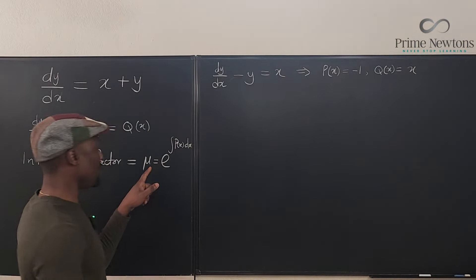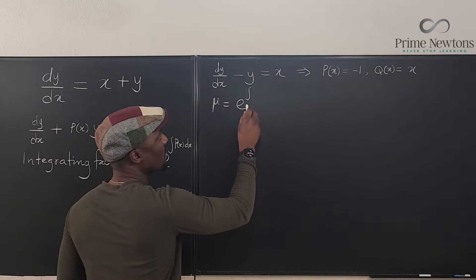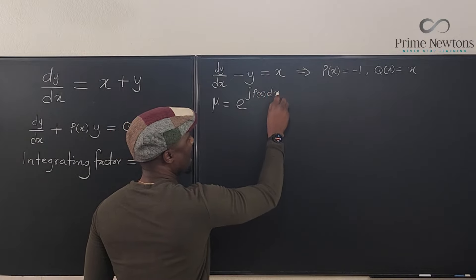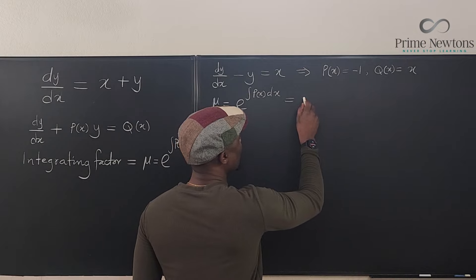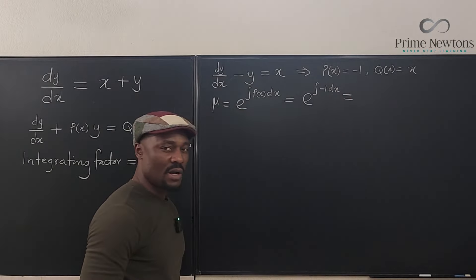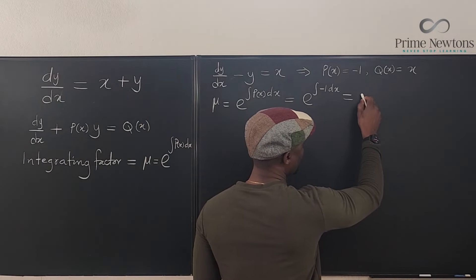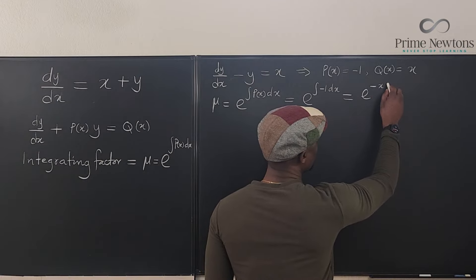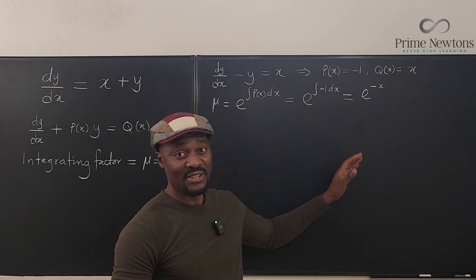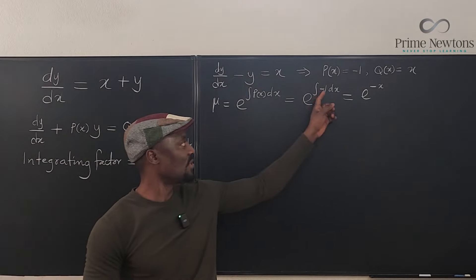Now let's find our mu, the integrating factor. We know it equals e raised to the power of the integral of P(x) dx, which is the same as e to the power of the integral of negative one dx. If we integrate negative one with respect to X we get negative X, so this is e to the negative X. Don't worry about adding plus C at this point — because we're dealing with the integrating factor, we'll use plus C much later. So e to the negative X is our integrating factor.